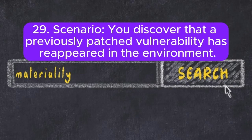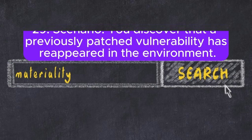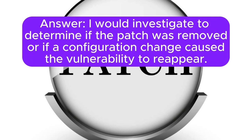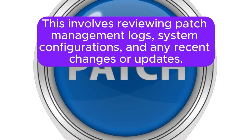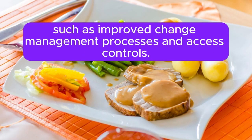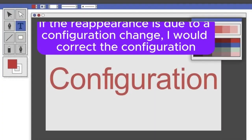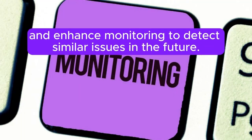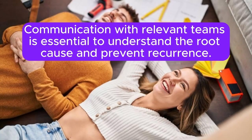Scenario 29: You discover that a previously patched vulnerability has reappeared in the environment. How do you investigate and resolve this issue? I would investigate to determine if the patch was removed or if a configuration change caused the vulnerability to reappear, reviewing patch management logs, system configurations, and any recent changes or updates. If the patch was removed, I would reapply it and implement measures to prevent unauthorized changes, such as improved change management processes and access controls. If the reappearance is due to a configuration change, I would correct the configuration and enhance monitoring to detect similar issues in the future. Communication with relevant teams is essential to understand the root cause and prevent recurrence.